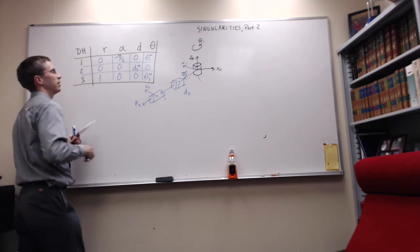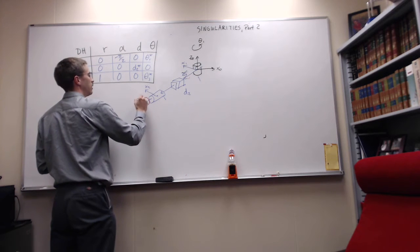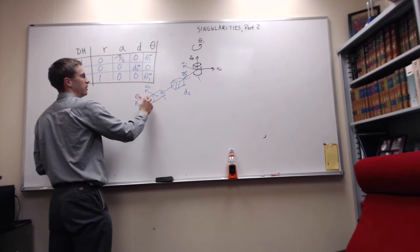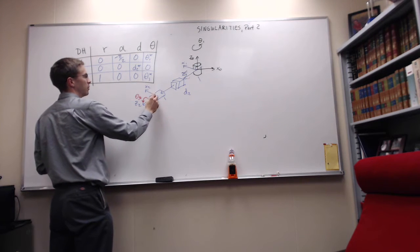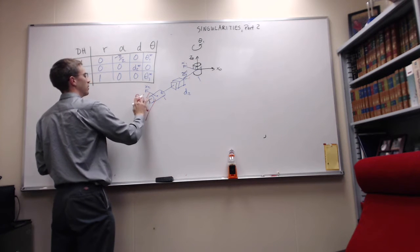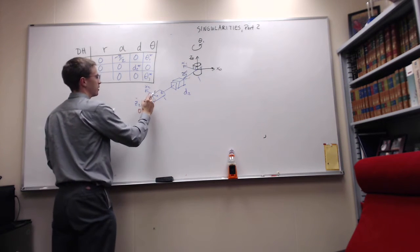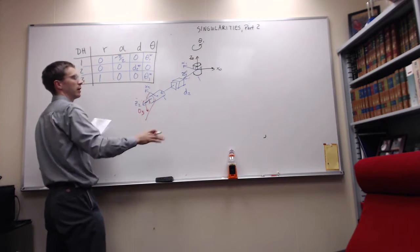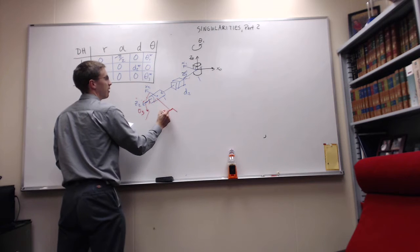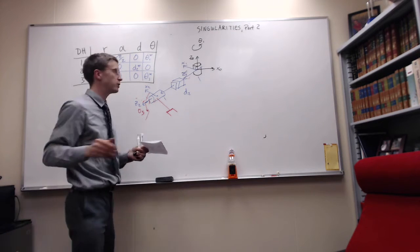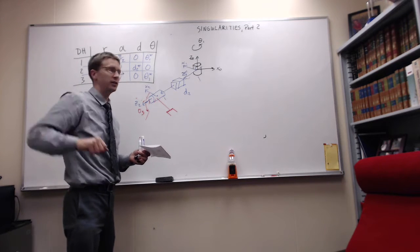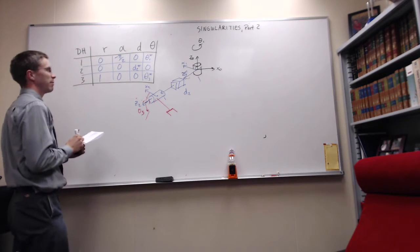This thing here can rotate. The rotation around here is theta three, which rotates my arm from X two. This angle here is theta three, rotating the arm around here. You can think of this as having a waist rotation, it can extend out, and then it can rotate that arm along this extension.